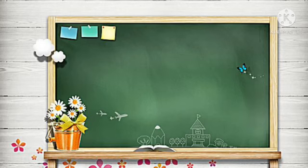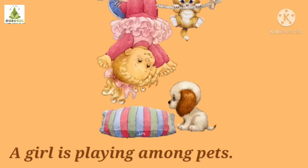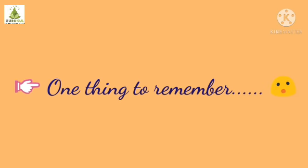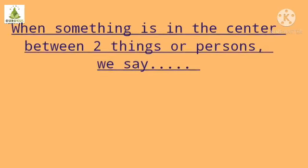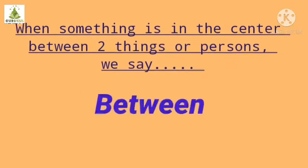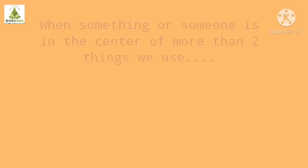Now we will learn the next preposition, and it is 'among'. Mowgli is playing among monkeys. Where can you see Mowgli playing? Among monkeys. A girl is playing among pets. Kids, there is one thing to remember between the words 'between' and 'among': when something is in the center between two things or persons, we say 'between'. And when something or someone is in the center of more than two things, we use 'among'.